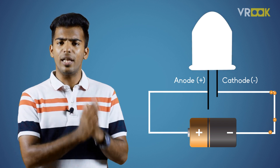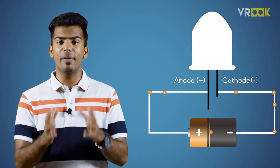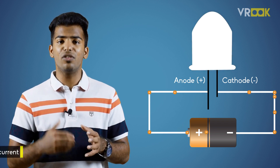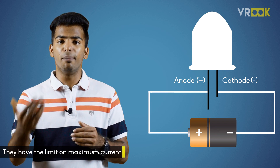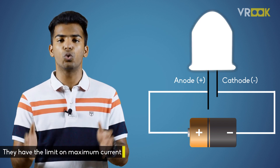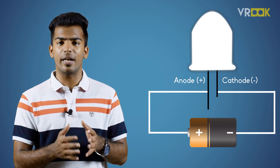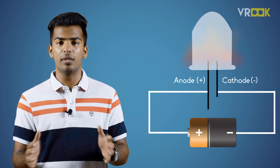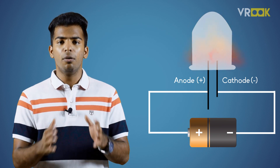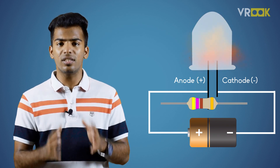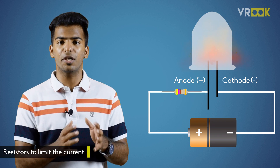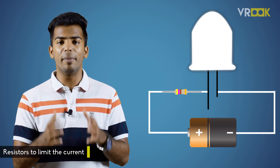The current flowing through the LEDs should be controlled because they have a limit on the maximum current that can flow through them. If the current exceeds this maximum, the LEDs will burn out. Most of the time we use resistors in the circuit with LEDs to limit the current.